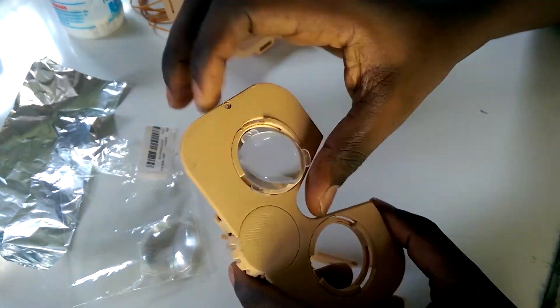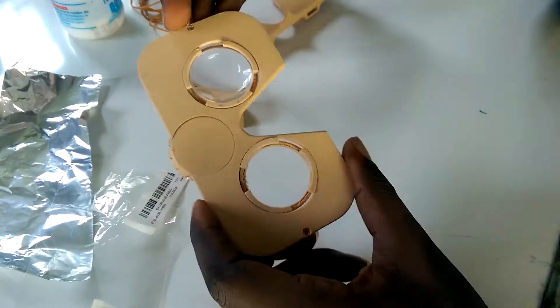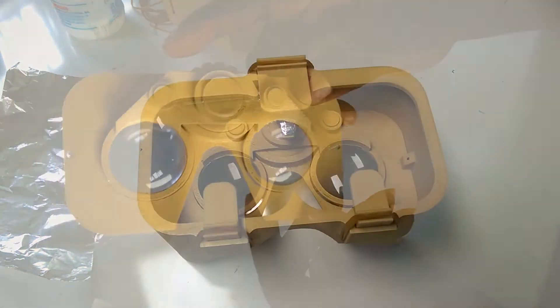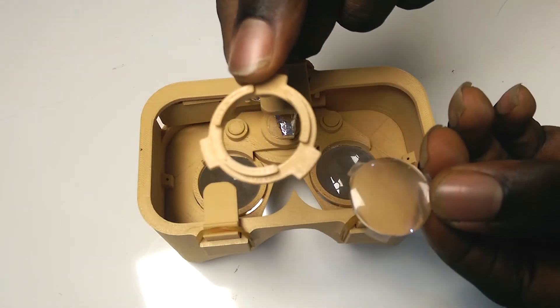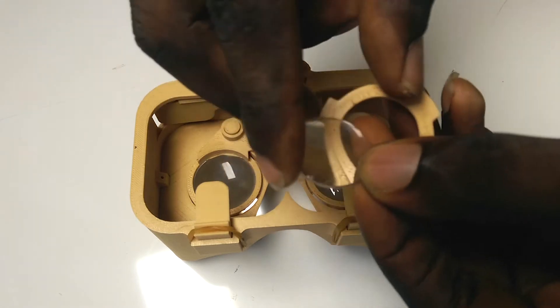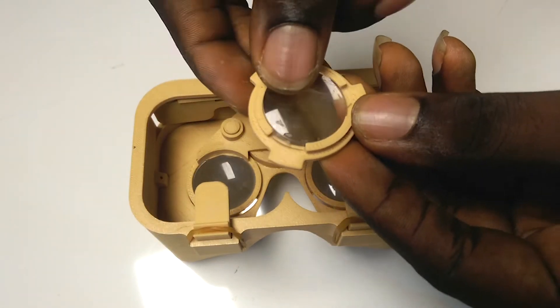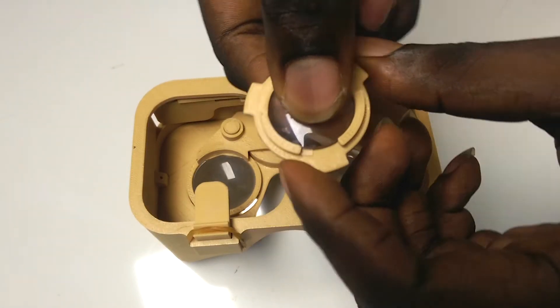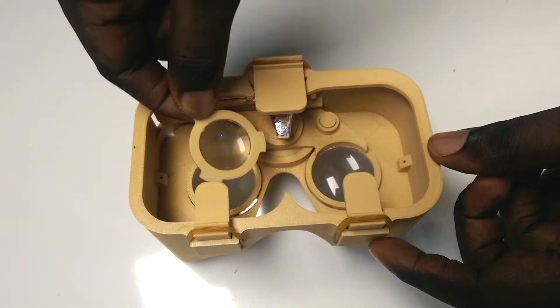You need to first attach the lens holder to the middle piece and then attach the lens. Note, you can use the lens from both version 1 and version 2 of the Google Cardboard. All you have to do is to print out the lens adapter also included with the STL files.